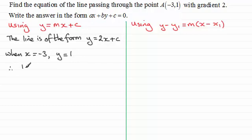And if we substitute these values into the form of the equation here, we therefore have, in place of y, we've got 1 equals 2 times x, which will be 2 times minus 3, and then we've got plus c. And so, therefore, we have 1 equals 2 times minus 3, which is minus 6, and then plus c.